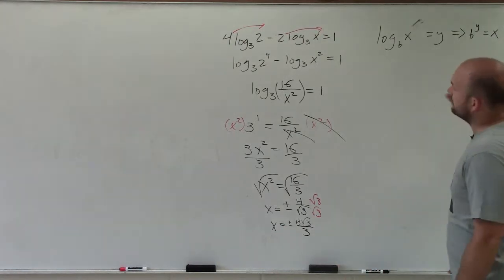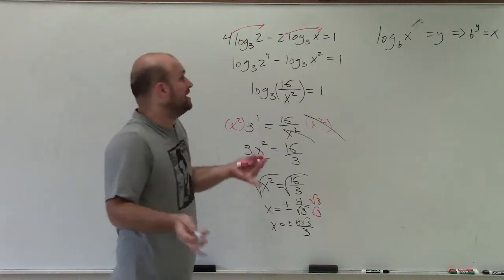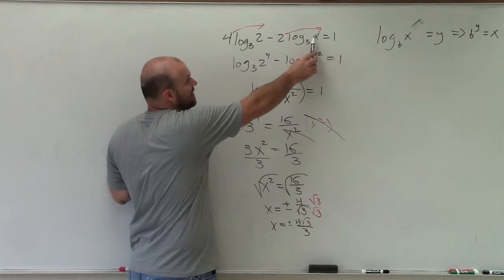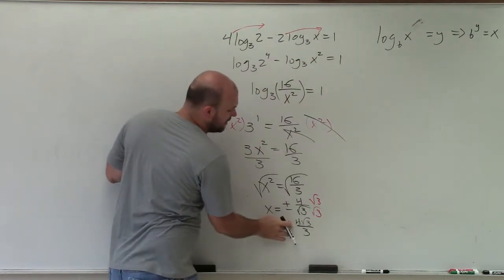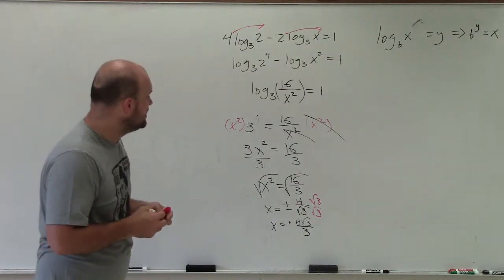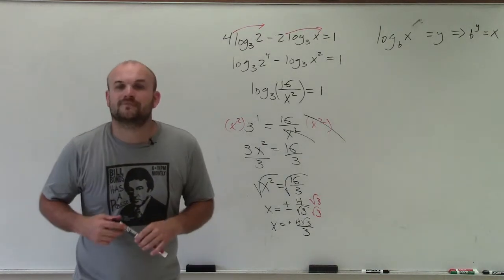So I go ahead and look at my equation, and I notice that I cannot take the logarithm of a negative value, right? And I notice if I have the negative answer, and I plug that in for x, then I cannot compute that logarithm. So therefore, the negative is going to be my extraneous solution. I only have one positive solution, and my one solution is x is equal to positive 4 square root of 3 over 3. Thanks.